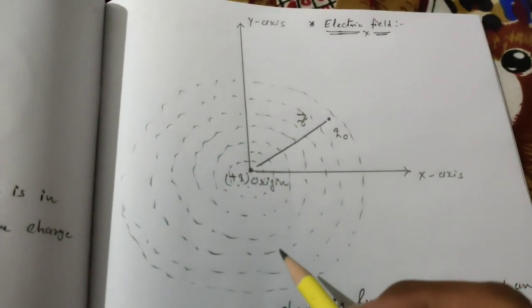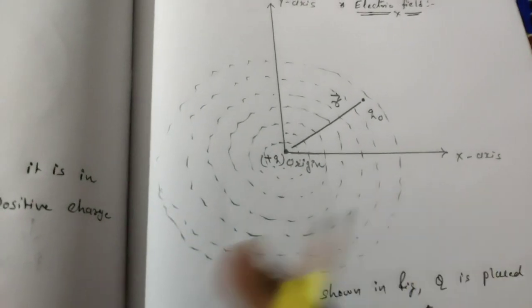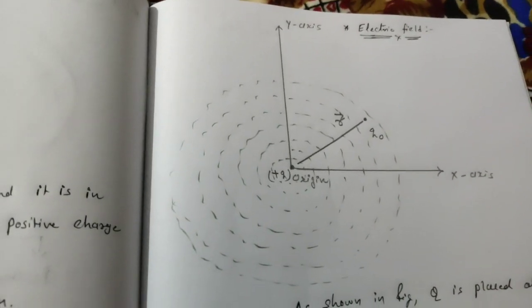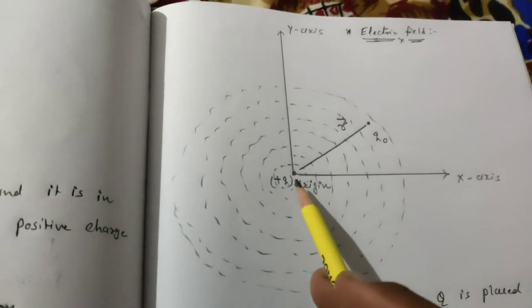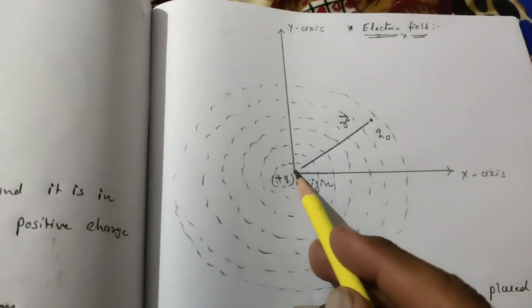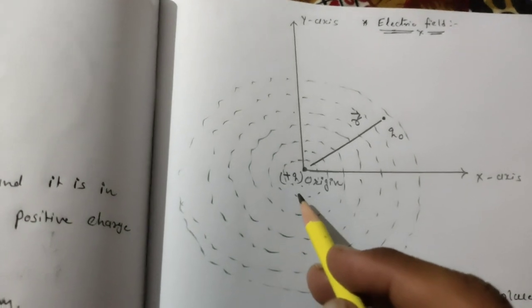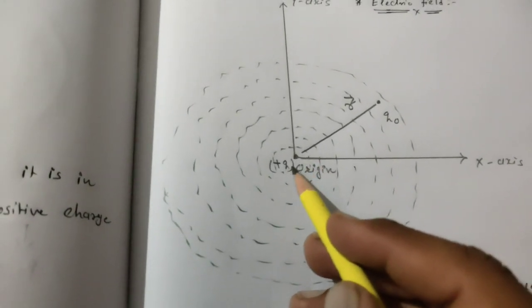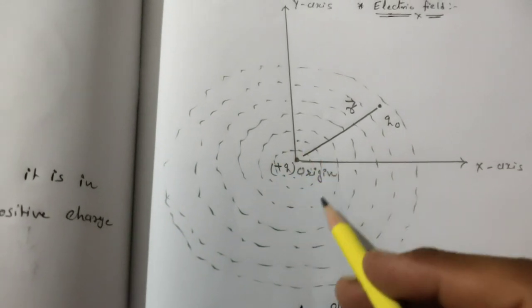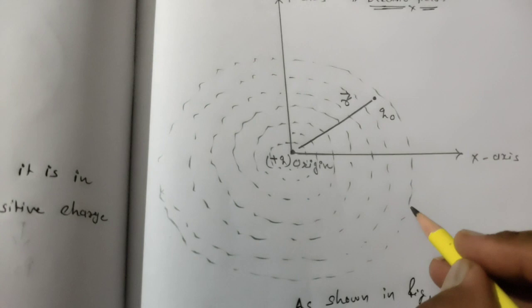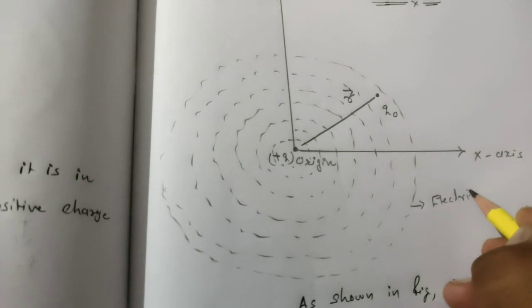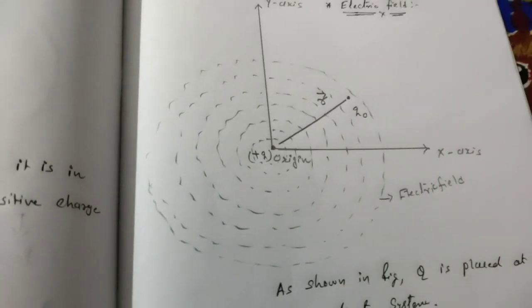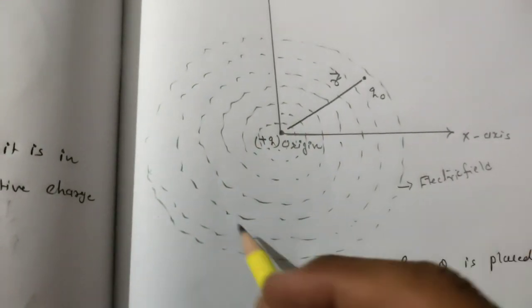Now we would like to find the intensity of electric field. This is the X-Y plane and at the origin I am going to put one charge Q — a positive charge. As we place positive charge here, surrounding this positive charge one type of field is created — this field is known as electric field. Now we would like to find intensity of electric field at a certain point.